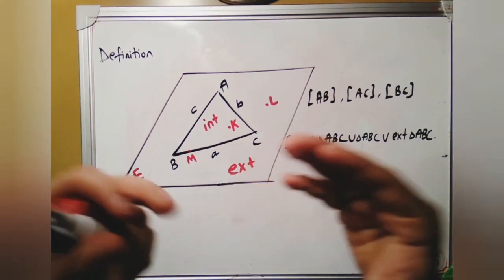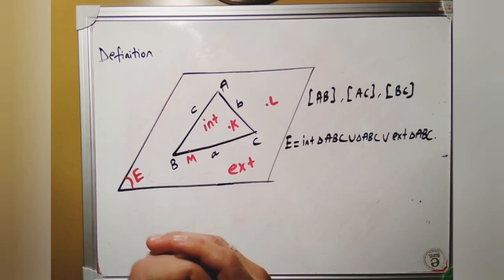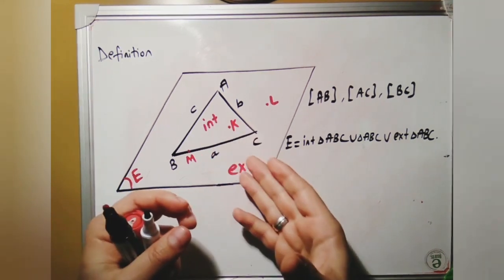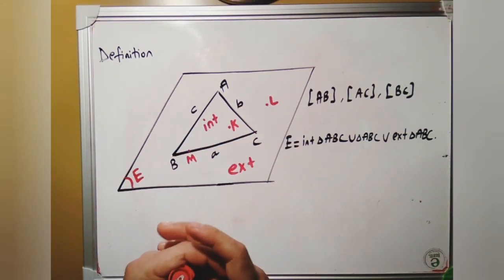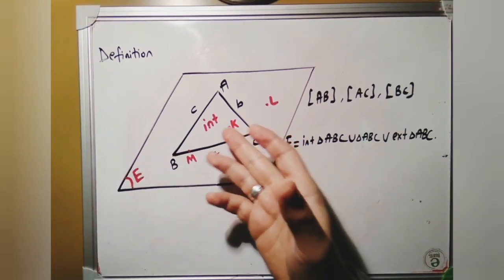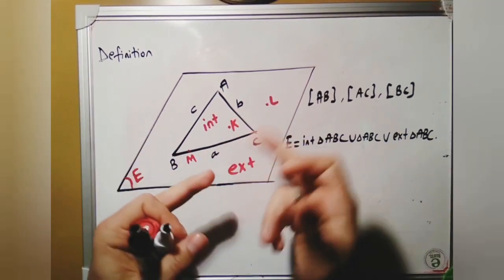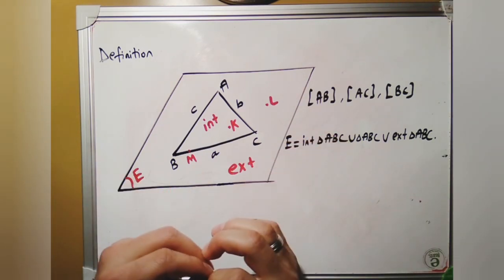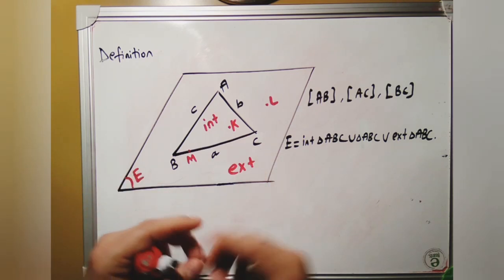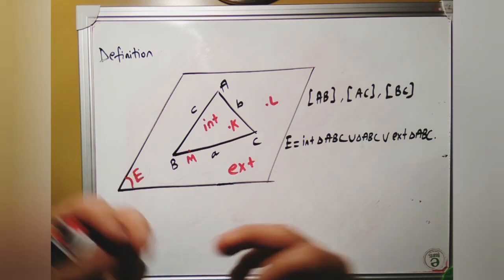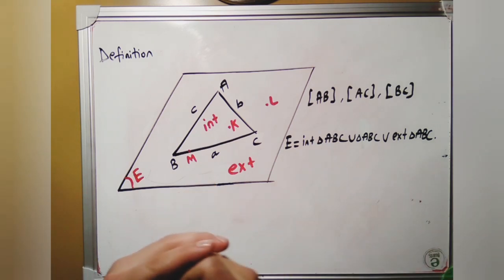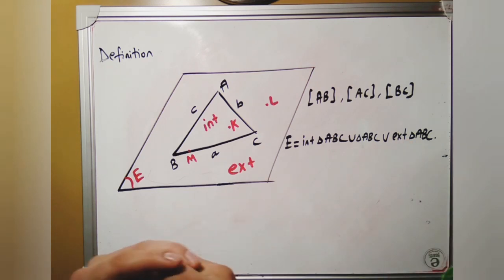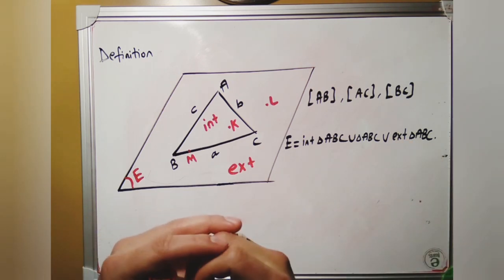Also, in a triangle there are three regions when we take the plane as E. We have three regions: interior, exterior, and on the triangle. For example, point K is an interior point of the triangle, point L is an exterior point of the triangle, and point M is on the triangle. So the plane equals the interior of triangle ABC, union the triangle ABC, union the exterior of triangle ABC.